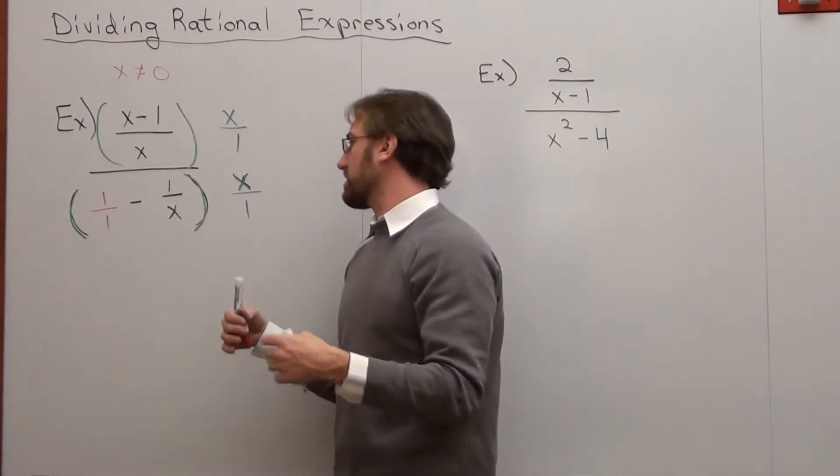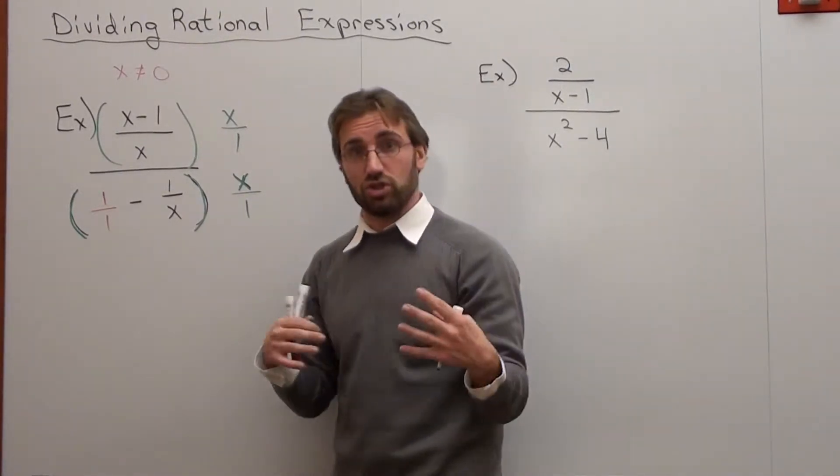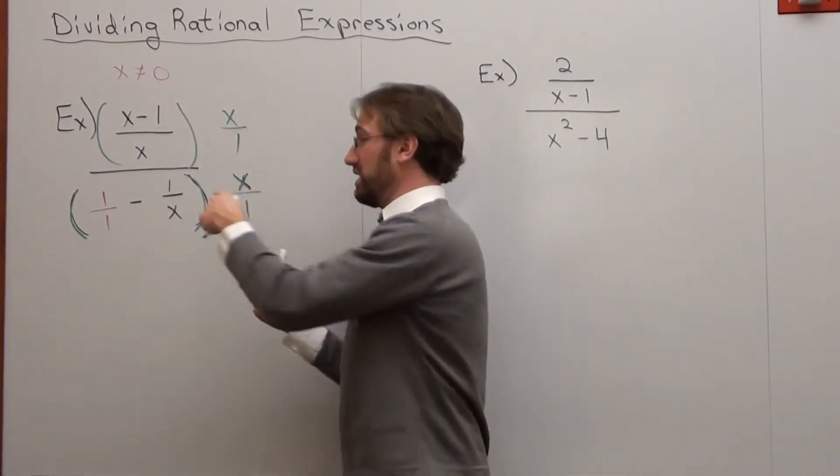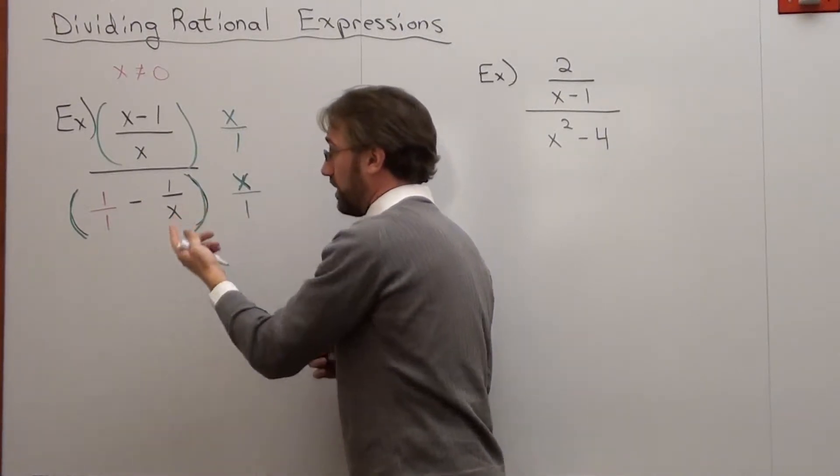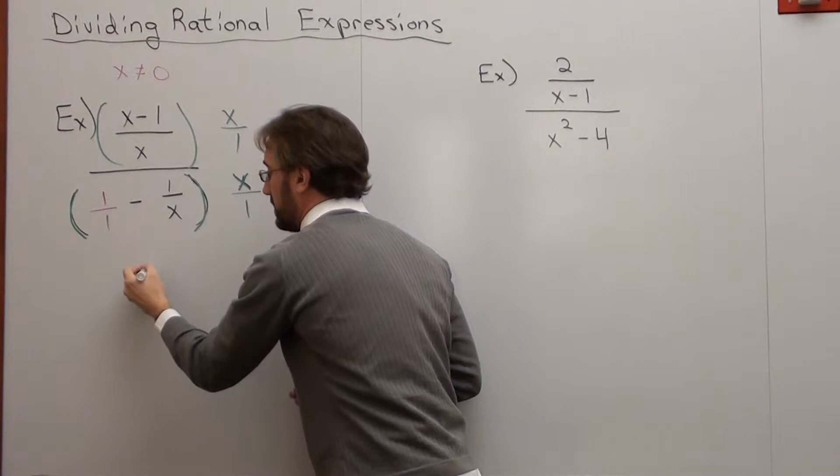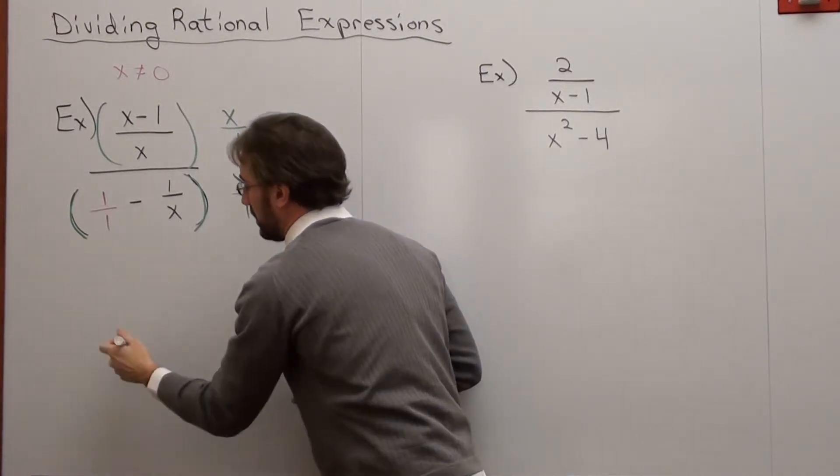Now, some people who are watching this can say, oh, I can simplify this now. Great, but let's just do it. So I want to take care of the denominator first. 1 over 1 times x over 1 is just x.